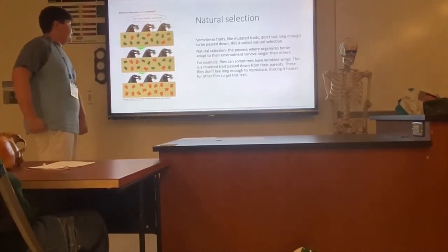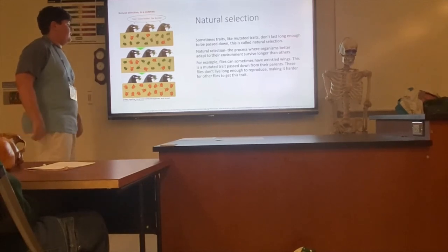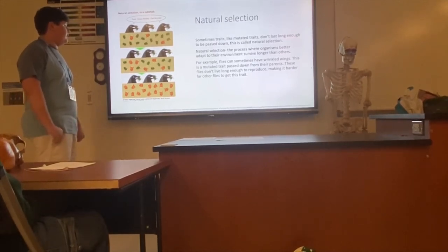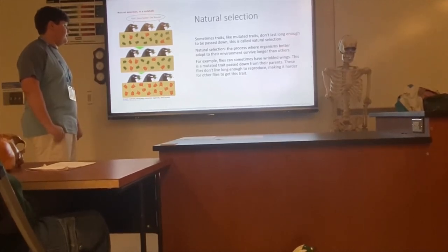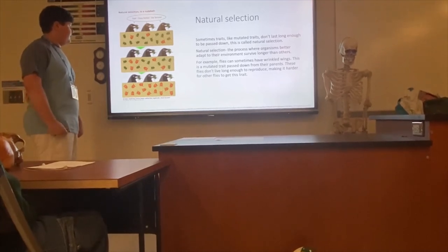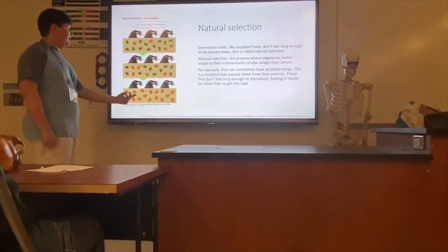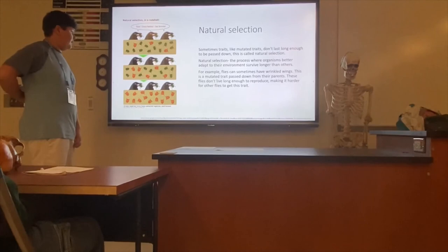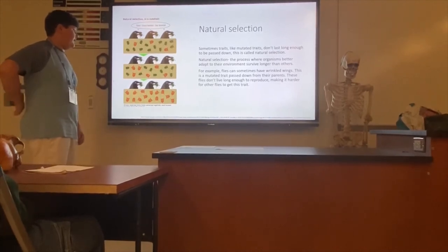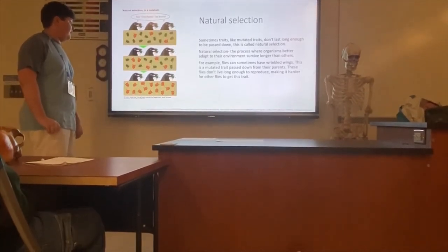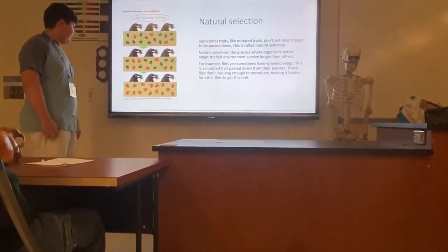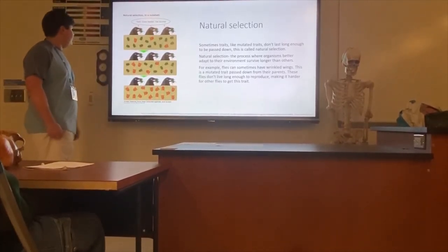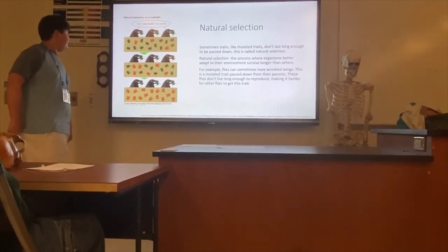Natural selection. Sometimes traits, like mutated traits, don't last long enough to be passed down — this is called natural selection. Natural selection is the process where organisms better adapted to their environment survive longer than others. For example, flies can sometimes have wrinkled wings, a mutated trait passed on from their parents. These flies don't live long enough to reproduce, making it harder for the trait to spread. In another example, these beetles are green, and the birds prefer eating the green beetles, so they all die off.